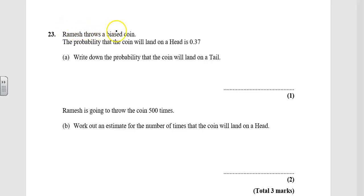Question 23. Ramesh throws a biased coin. The probability the coin will land on a head is 0.37. Write down the probability the coin will land on a tail.